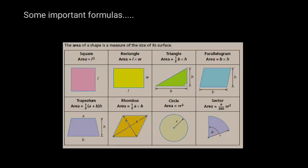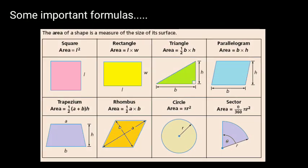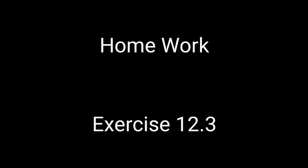Some important formulas for this chapter — which you already studied in previous classes — include: area of square, rectangle, triangle, parallelogram, trapezium, rhombus, circle, and sector. For homework, complete Exercise 12.3 and solve the questions. If you have any doubts, you can ask me. Thank you everyone.